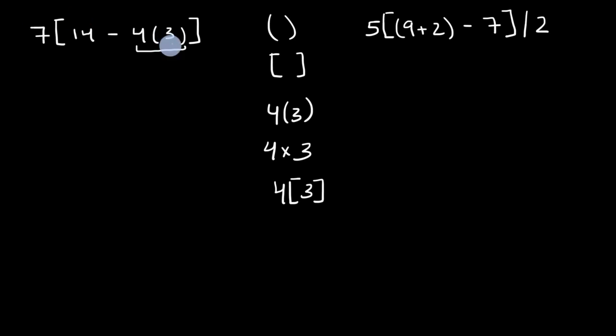So the first thing I want to evaluate is that four times three, which is going to be 12. And so now I can rewrite it as seven. This is really seven times 14 minus, I'll write that 12 in that same color, minus 12, and I'm going to close the brackets.